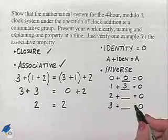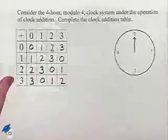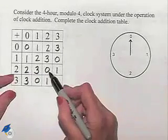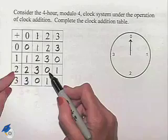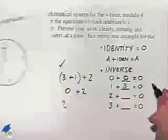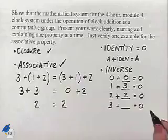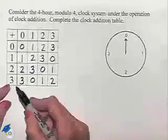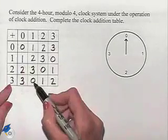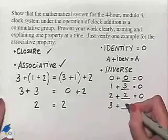2 plus what gives us 0? Again, using the table, we're looking for a result of 0. And we can see that that occurs when we add 2 to itself. And then 3 plus what gives us 0? Again, back to the table. If we take 3 and add that to 1, we come up with 0. So, 3 plus 1 equals 0.